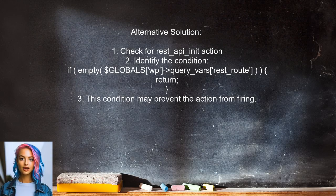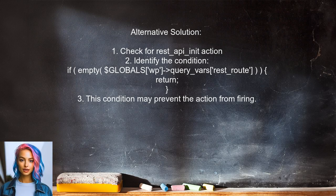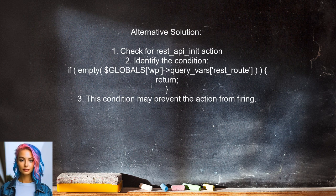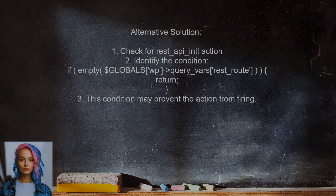Another user points out that they are not seeing the REST API init action being fired. They discovered that a specific condition in the plugin code is preventing this action from executing. The code checks if the REST route query variable is empty, and if it is, the function returns early, stopping the action from firing.